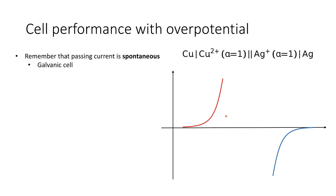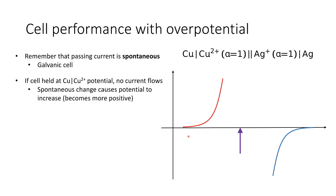If we connect a potentiostat, which allows us to control the potential on the cell, we can hold the cell at a particular potential. Let's hold the cell at the copper equilibrium potential — no current flows, the copper is at equilibrium. However, if we then release that potential and allow current to flow freely under the thermodynamics of the cell, the spontaneous change causes the potential to increase and become more positive, allowing oxidation current to flow at the anode, and we establish an equilibrium position.